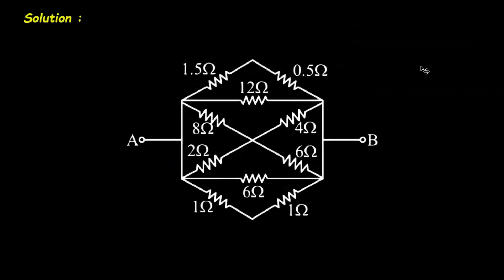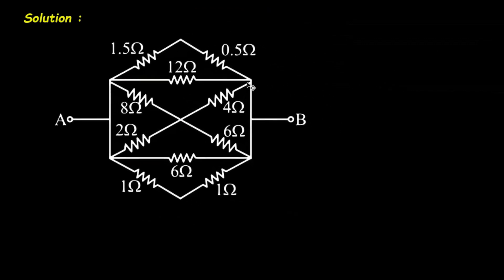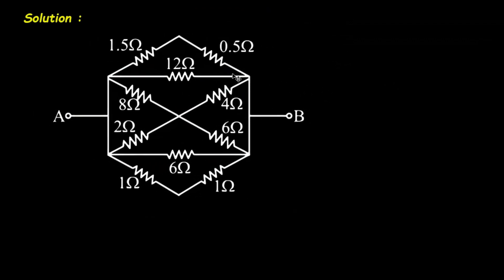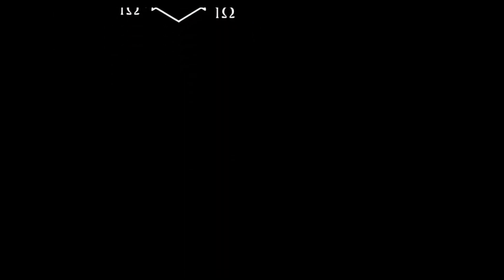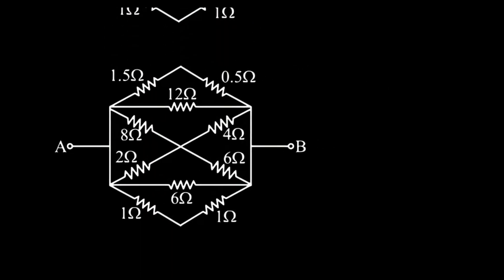Solution. First of all, we will take this circuit. Here we can clearly see this 1.5 Ohm is in series with this 0.5 Ohm. So it will be simply 1.5 plus 0.5, which gives us 2 Ohm.